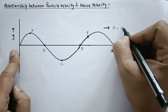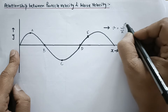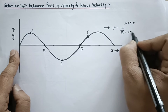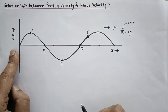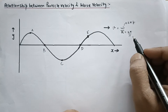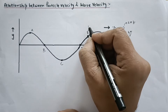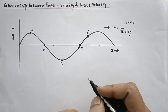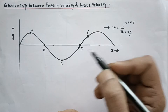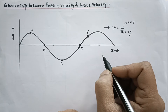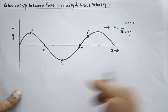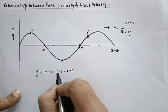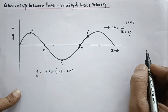The wave velocity equals omega by k, where omega is 2 pi f, f is the frequency, and k is 2 pi by lambda - the wave number. This is the wave velocity, whereas the particle velocity is exhibited in the y-direction. The slope of the graph is dy by dx. We must know the equation of the wave traveling in the positive x-direction: y equals A sin(omega t minus kx).